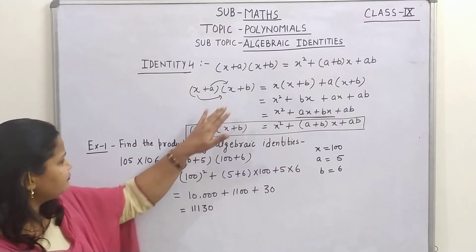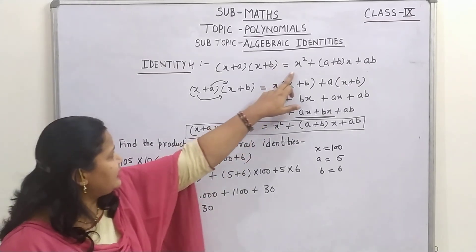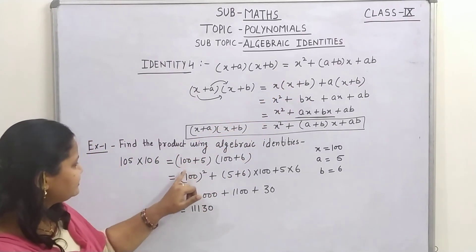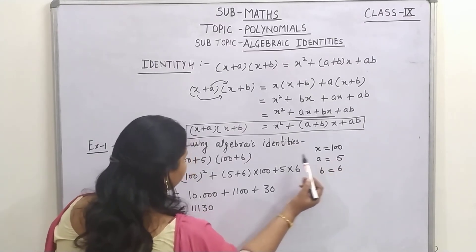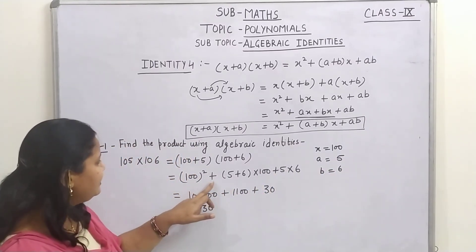So now we can use this identity, here it is x square, so in place of x square, as we have taken 100 in place of x, so in place of x square we can write 100 square plus